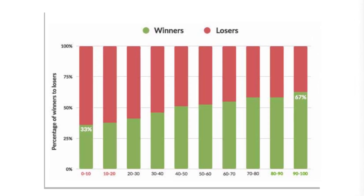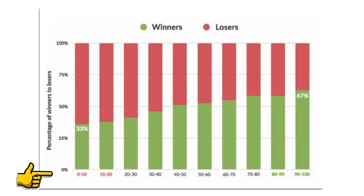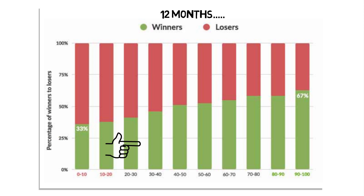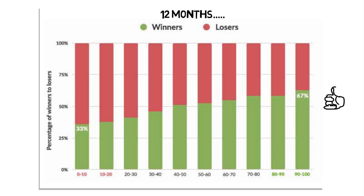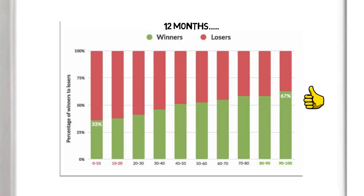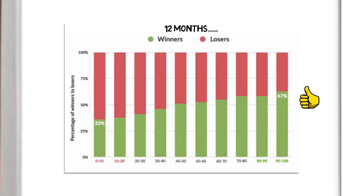We can see here that the lowest ranked stocks, which are a combination of quality, value and momentum factors, provided a 33% probability of picking a winning stock when measured over the following 12-month period. Conversely, the highest ranked stocks provided a 67% probability of picking a winning stock. Again, the correlation between the factor rankings and the probability of success is profound.